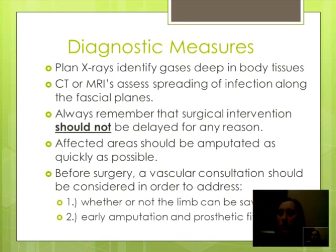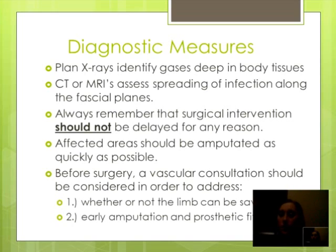There are many diagnostic measures taken into account for someone with gas gangrene. Plain x-rays identify gases deep within body tissues. CT scans or MRIs assess the spreading of infection along the fascial planes. Always remember that surgical interventions should not be delayed for any reason. The affected areas should be amputated as quickly as possible. Before surgery, a vascular consultation should be considered in order to address whether the limb can be salvaged or whether early amputation and prosthetic fitting measures are needed.